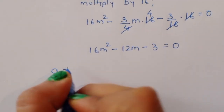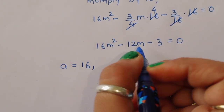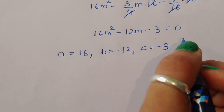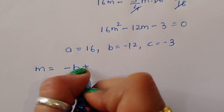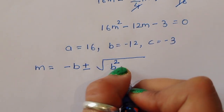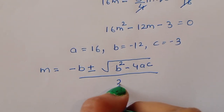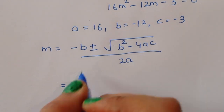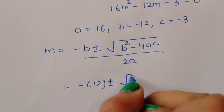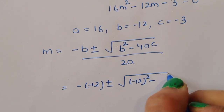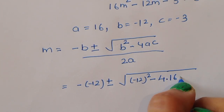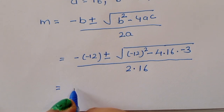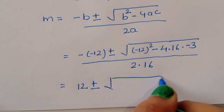Here the coefficients are: a equals 16, b equals minus 12, and c equals minus 3. Using the quadratic formula m equals [minus b plus or minus square root of (b squared minus 4ac)] upon 2a, we substitute: minus b is 12, b squared is 144, 4 times a times c is 4 times 16 times minus 3, divided by 2 times 16 which is 32.